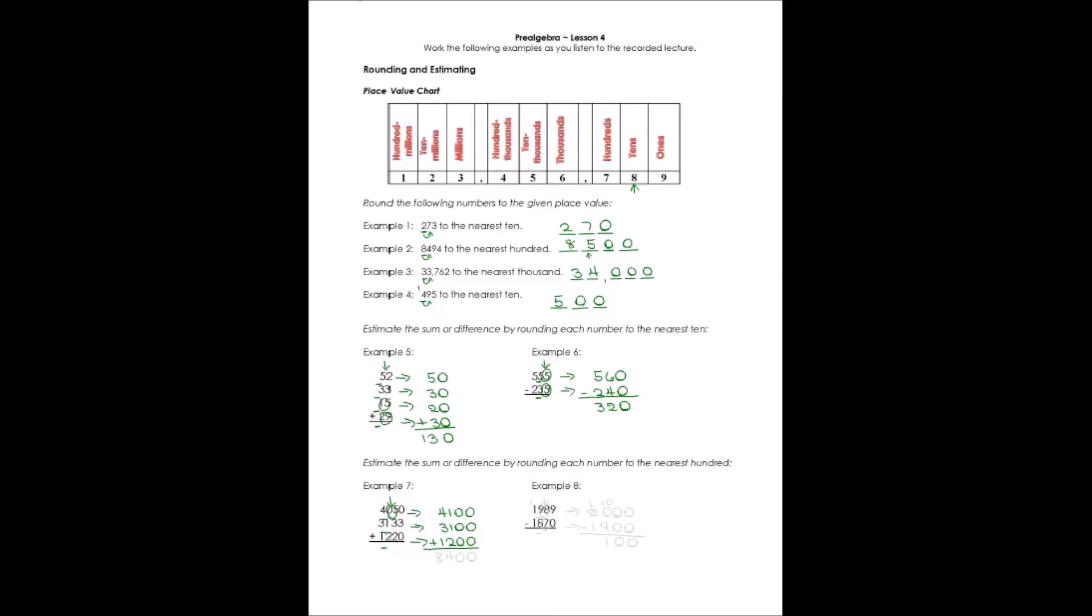I can add these numbers together very quickly. The ones place and the tens place are all zeros. 1 plus 1 plus 2 is 4. And 4 plus 3 is 7, plus 1 would be 8. My estimated answer, 8,400.